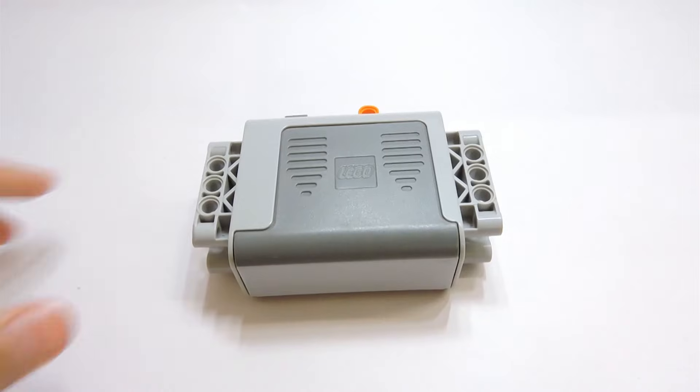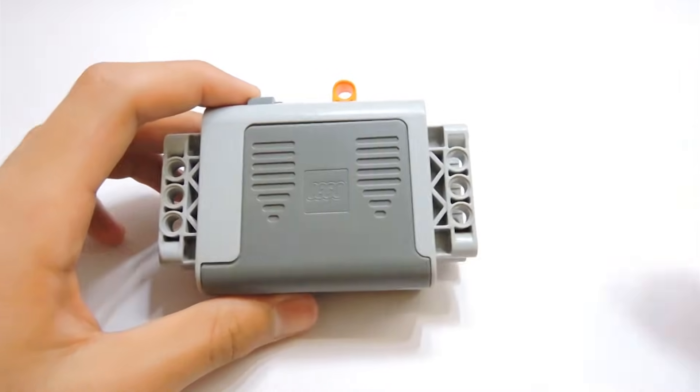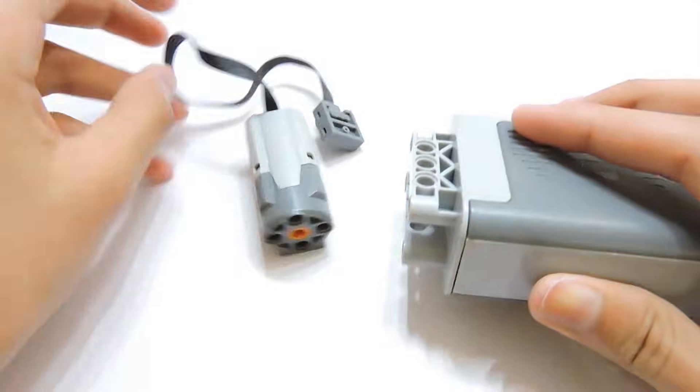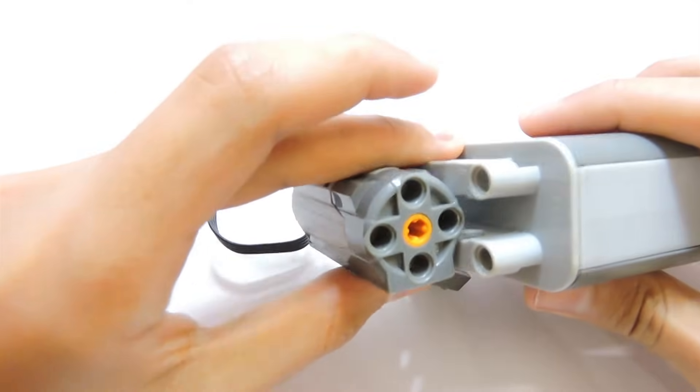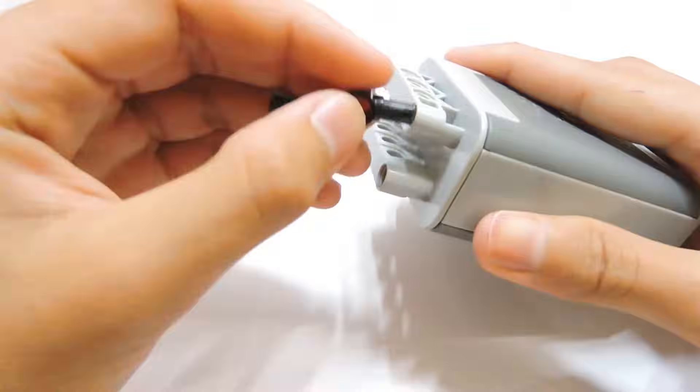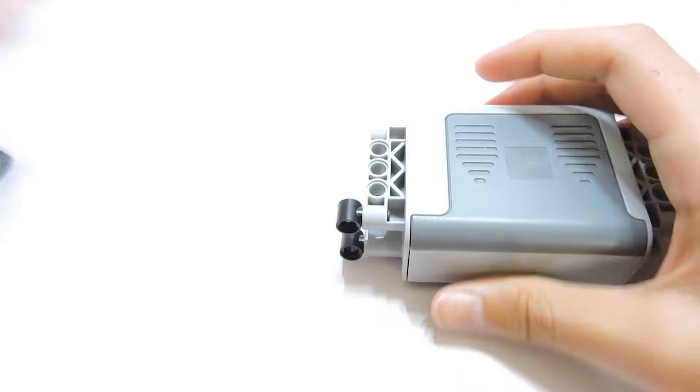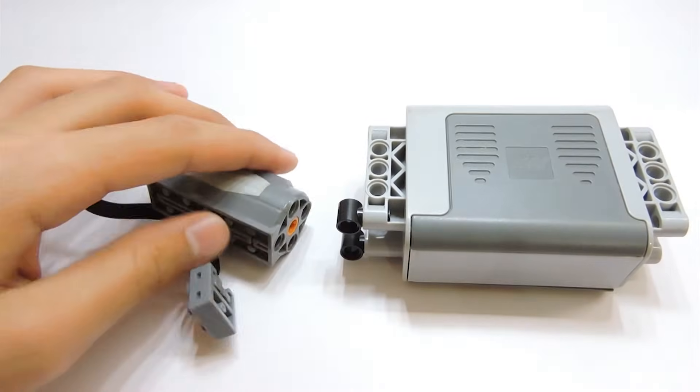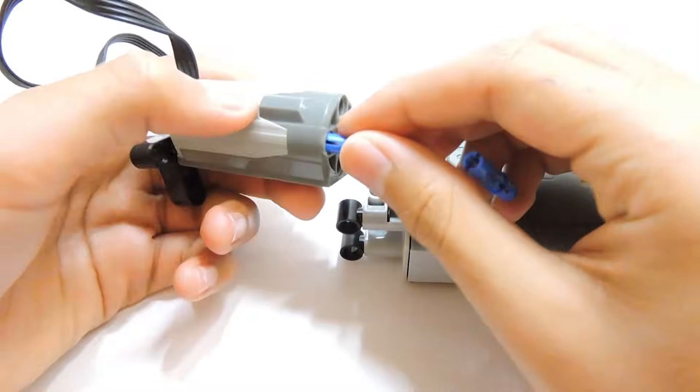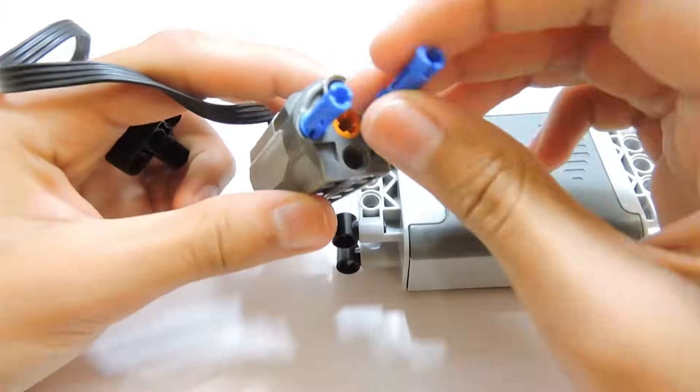We are gonna start off with the battery box and try to attach the M motor to it somewhat like that. To do this, we're first gonna attach these two pieces to the battery box here. Next, we're gonna create a little assembly on the motor by attaching two blue connectors and one black connector onto it.